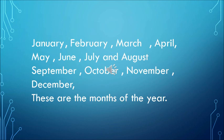January, February, March, April, May, June, July, August, September, October, November, December — these are the months of the year. These are the months of the year. So we have known the different names of the months of the year, and that there are 12 months in a year.